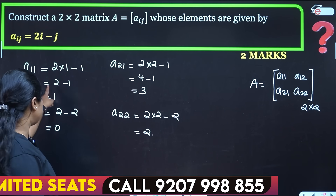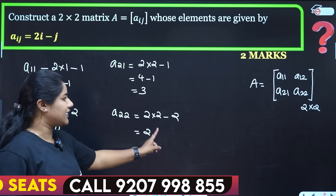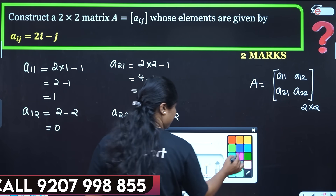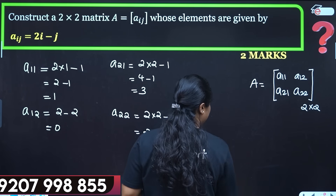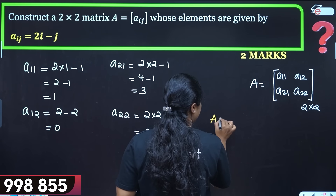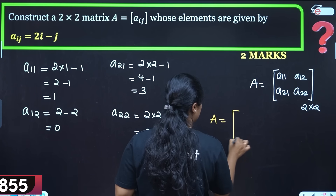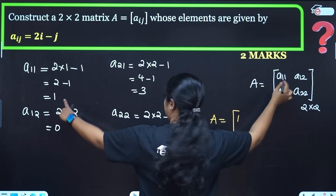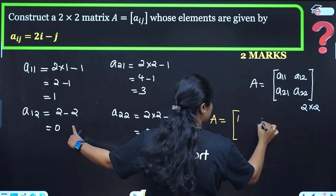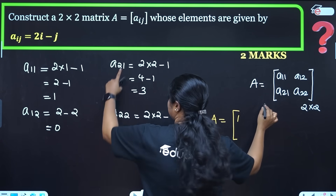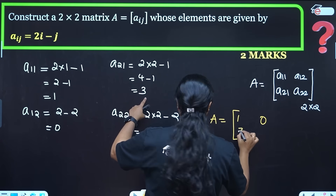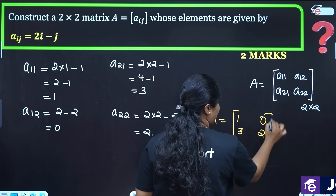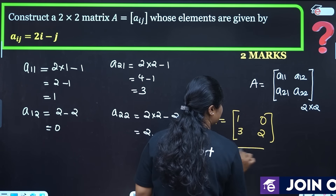Now we have 4 elements. So matrix A is equal to: a11=1, a12=0, a21=3, and a22=2. This is our matrix.